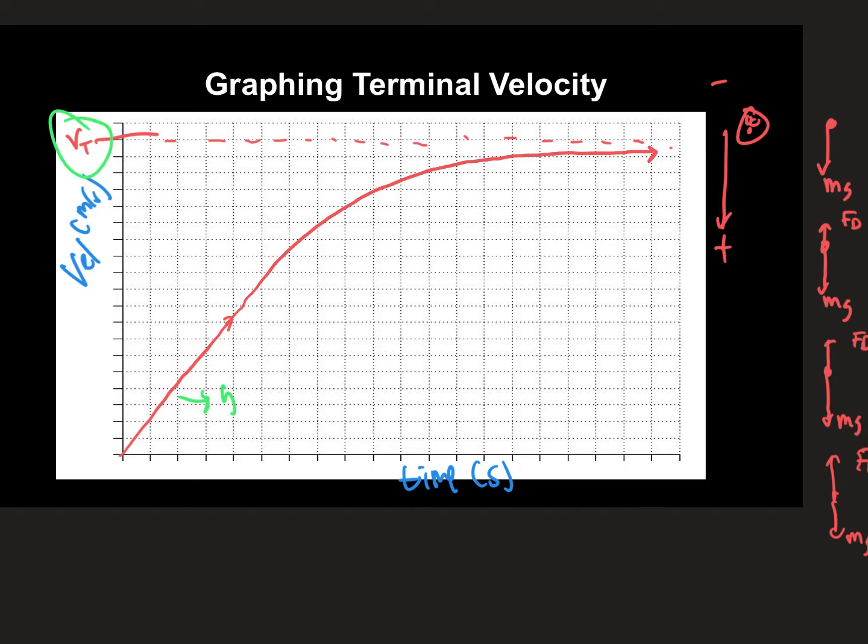Now, I have seen this before on the AP physics free response questions. So you can kind of gauge a lot of different things from this graph. But that's kind of the big takeaways here is if you can just understand that the slope right here would be equal to gravity. So 10 meters per second squared. And then we have a deceleration causing our acceleration at terminal velocity to be zero because remember the slope is perfectly flat.